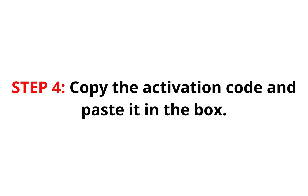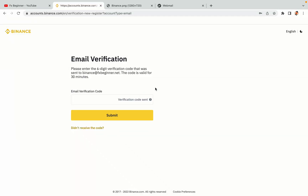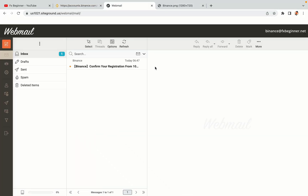Step 4: A confirmation code will be sent to your mail. Open your mail inbox, copy the code and paste it in the box to fully activate your Binance trading account.